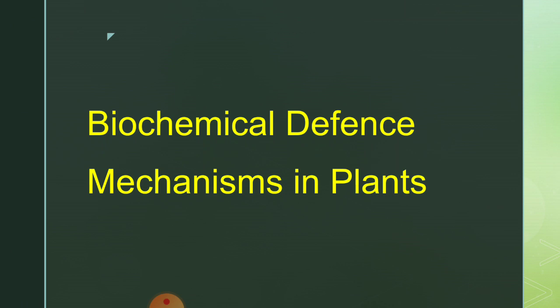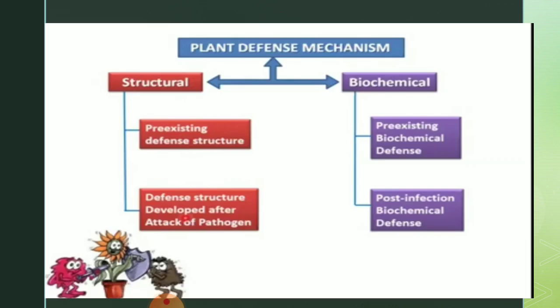However, biochemical defense may exist in plants even before the attack by the pathogen, or it may appear as a result of interaction between the host and the pathogen after the attack. On this basis, there are two types of biochemical defense operating in plants: pre-existing biochemical defense and post-infection or induced biochemical defense.